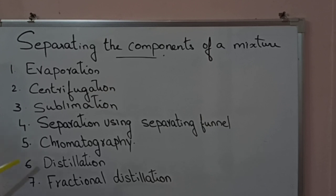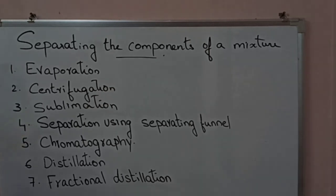Sixth method is distillation and seventh method is fractional distillation. Both distillation and fractional distillation methods are used to separate miscible liquids, while the fourth method (separating funnel) is used to separate immiscible liquids.